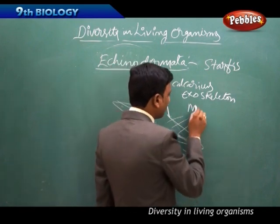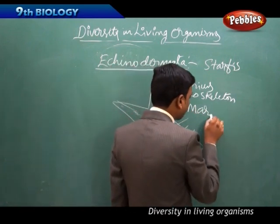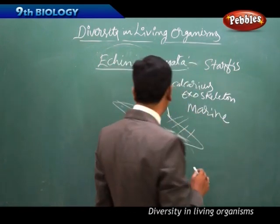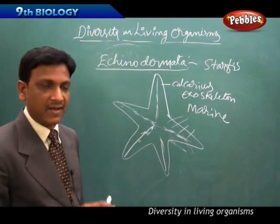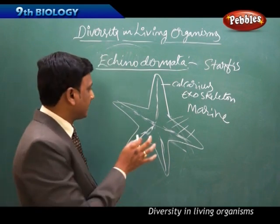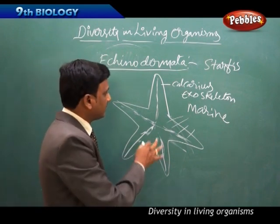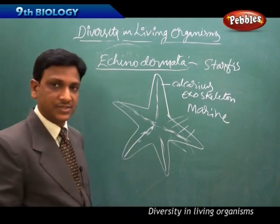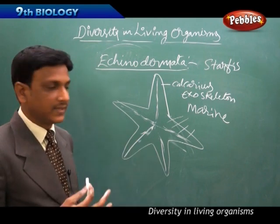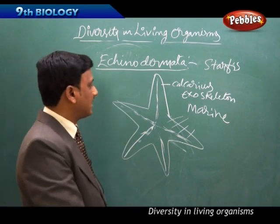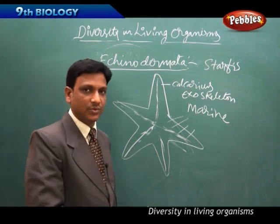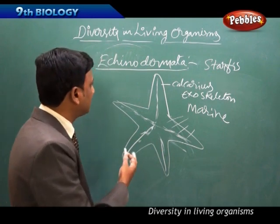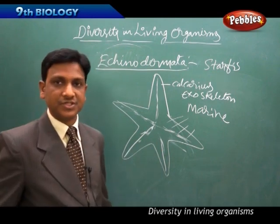Echinoderms are marine organisms — they live in salt water. They have a special canal system through which water passes, and a calcium-made shell outside their body. Examples are sea urchins and starfishes.